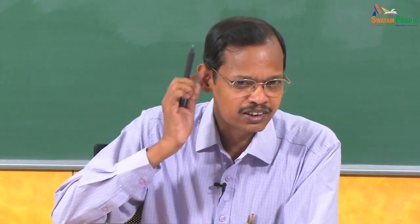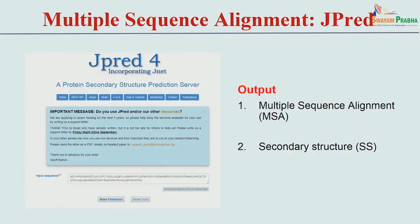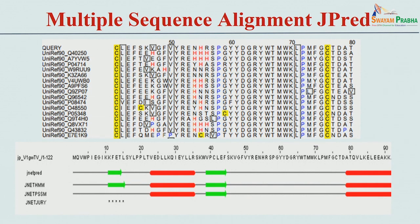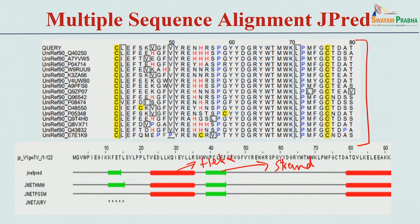J-PRED is one of the earliest methods using multiple sequence alignment. It takes any amino acid sequence as input. When you run a prediction, it provides the multiple sequence alignment for any given sequence as well as the secondary structure. In the output you can see the multiple sequence alignment; here a helix symbol stands for helix and an arrow stands for strand. Highly conserved residues give a high conservation score, resulting in very high prediction accuracy.